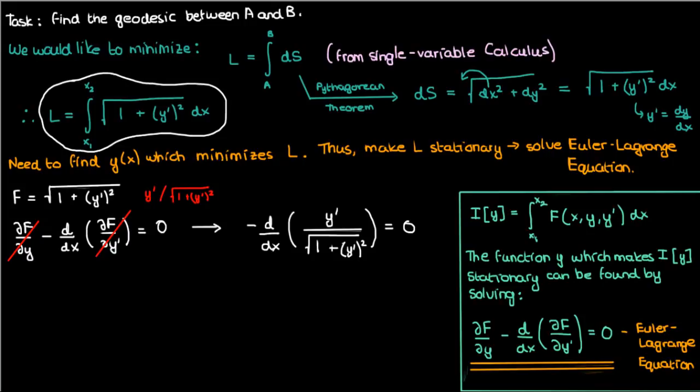Now this equation is relatively simple because partial capital F partial y turned out to be zero. In fact ideally we want the partial of capital F with respect to y to be zero so that the Euler-Lagrange equation we're solving is more simplified.